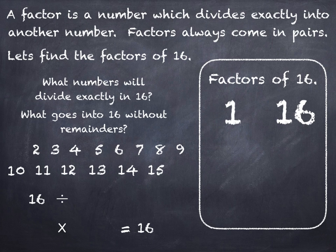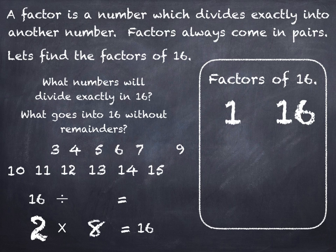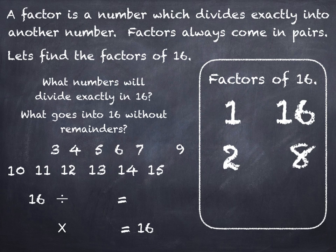Okay, on to the next number. 16 divided by 2. Does 2 go into 16 exactly without any remainders? Yes it does. So 2 and 8 are both factors of 16, so we can put them in our box.